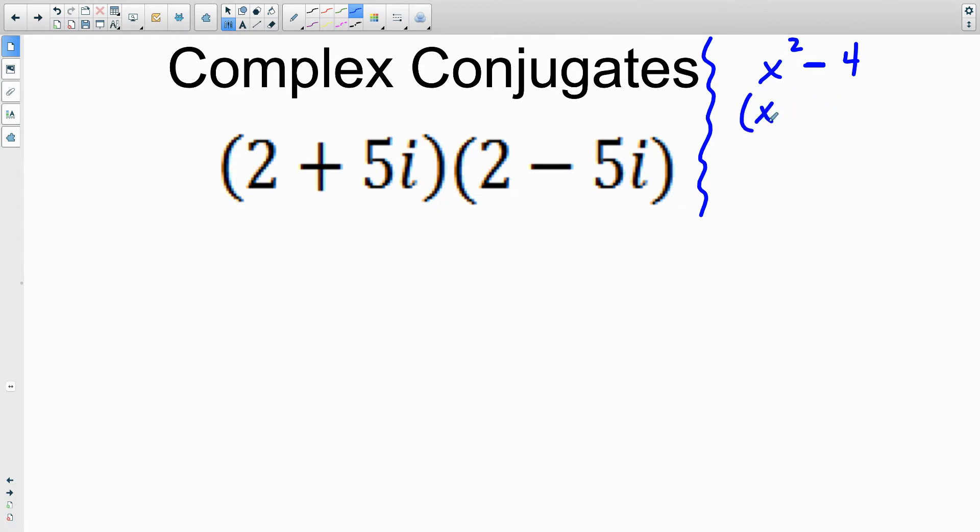The difference of squares can be factored every time into what we call conjugates. Conjugates are binomials that have the same term in the front and the same term in the back, one of them with a plus, one of them with a minus.